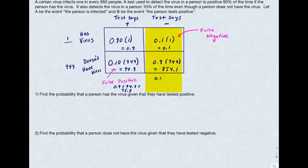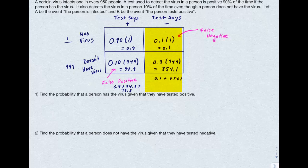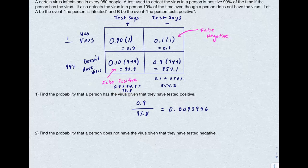For my second column, that is the number of people who have tested negative for the disease, that's 854.2. What's the probability a person has a virus given that they've tested positive? Well, the number of ways for that to happen, for both them to being positive and having the virus, is 0.9, divided by all the ways that I could end up testing positive, and that's 95.8.